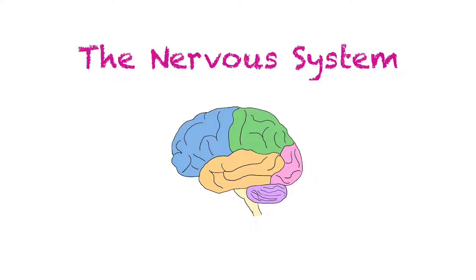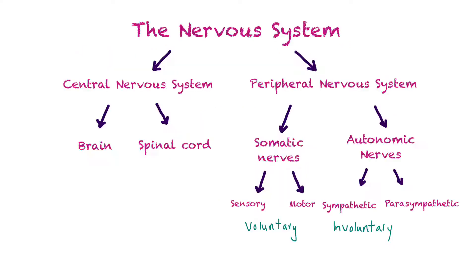In this video we're going to learn all about the nervous system. We'll learn that the nervous system is broken down into the CNS, the central nervous system, and the PNS, the peripheral nervous system. We'll also learn about the structure and function of neurons.